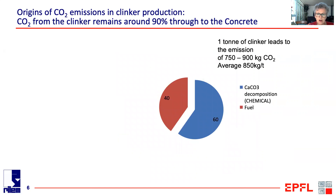We need to look at where the CO2 emissions from cement come from. One ton of clinker today leads to emissions of between 750 and 900 kilos of CO2 — on average about 850 kilos per tonne. The minority, about 40%, comes from the fuel used to produce the clinker.